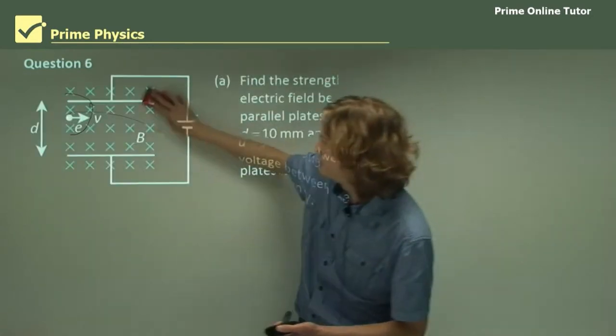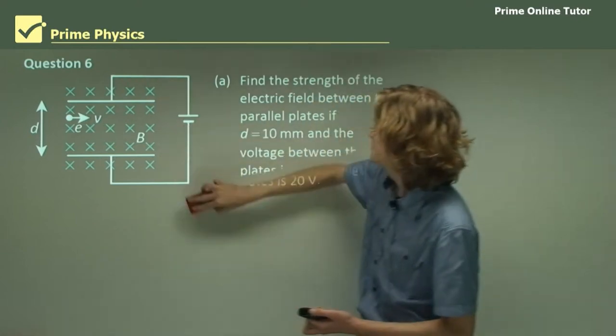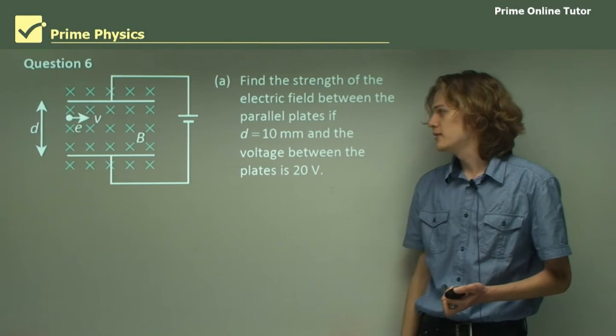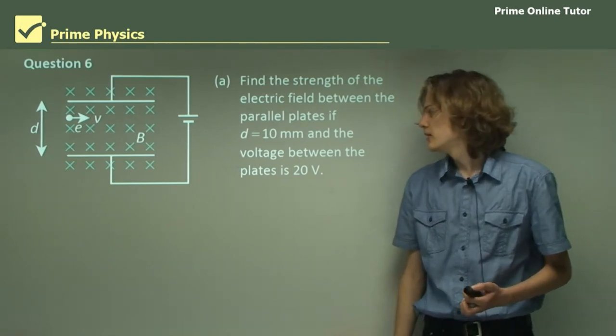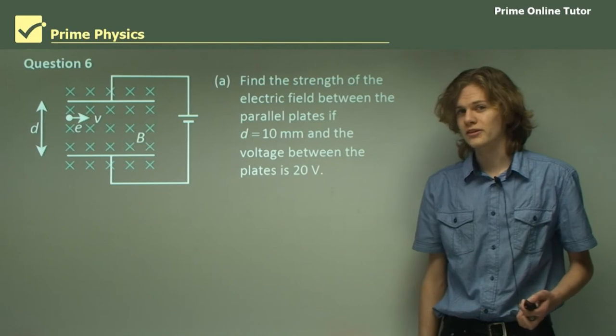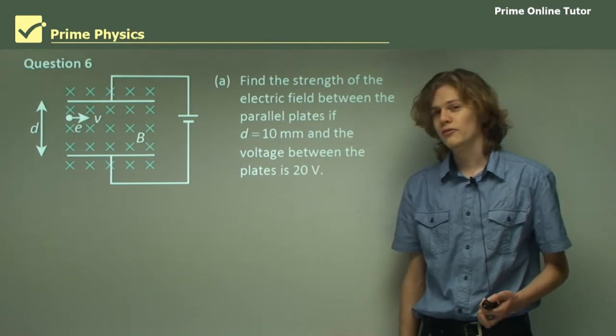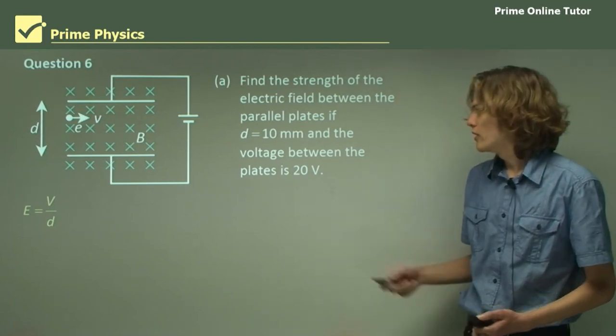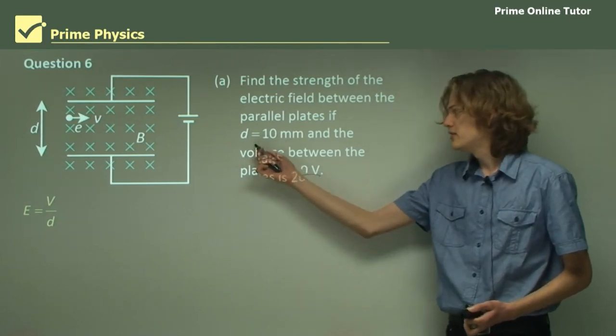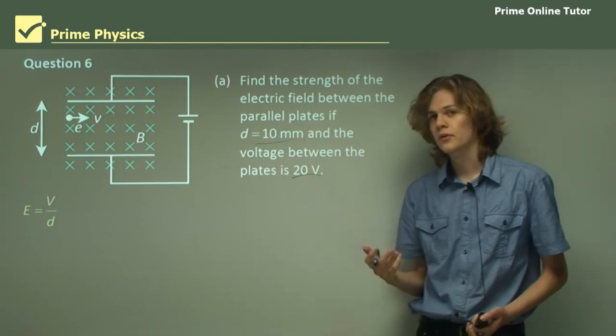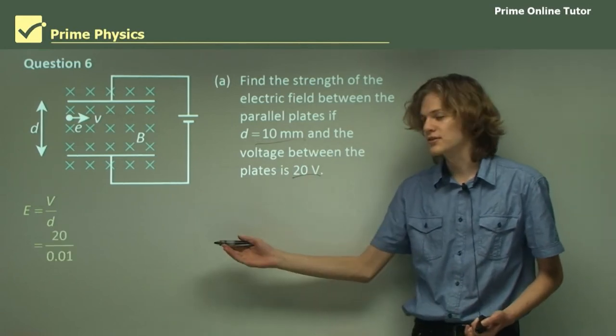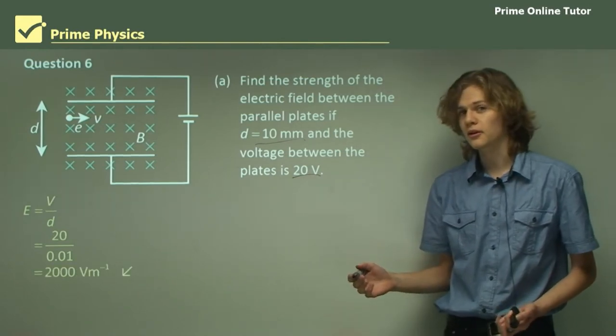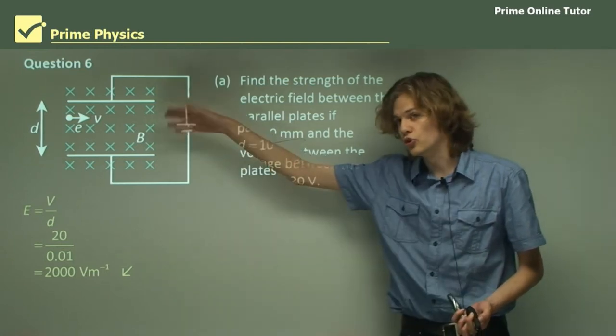On to the next question. In this diagram, find the strength of the electric field between the parallel plates if the distance between them is 10 millimeters, and the voltage between the plates is 20 volts. The relevant equation here is e equals v on d. We can substitute 20 volts in for v, and 10 millimeters in for d. We can put that into a calculator, and it evaluates to 2000 volts per meter. So that's the strength of the electric field between the two plates.